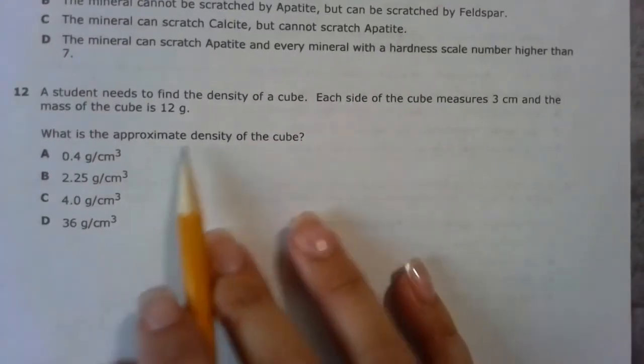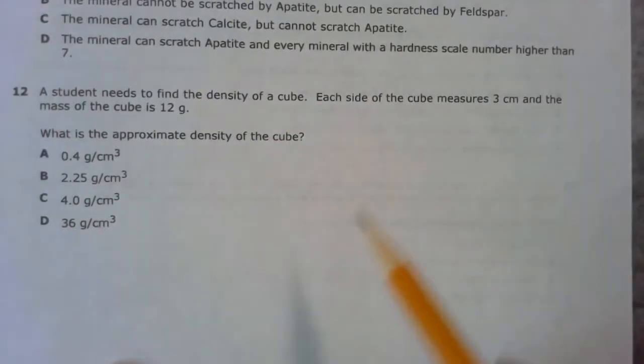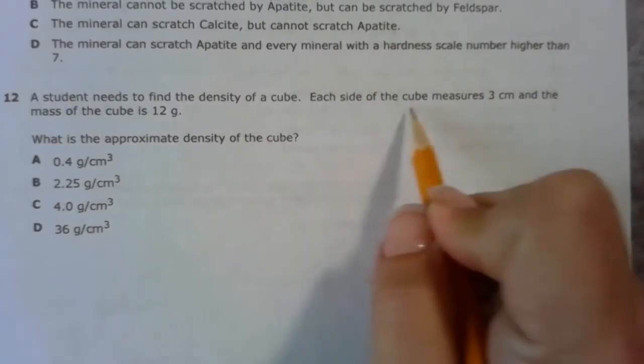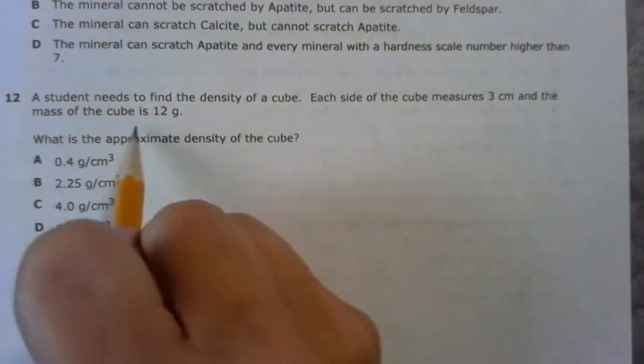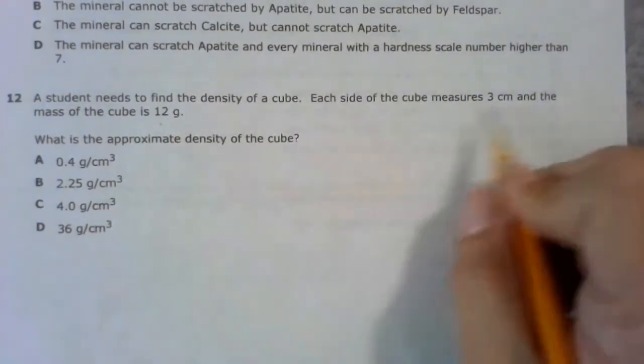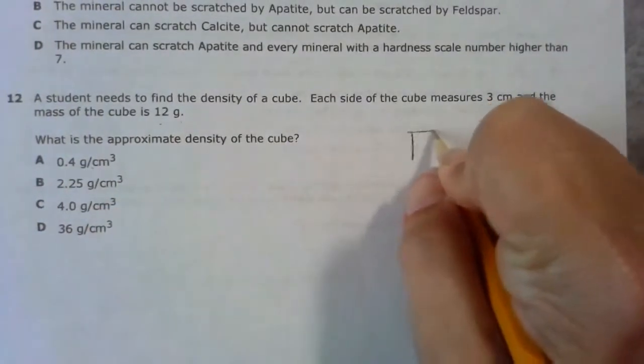Okay, number 12. A student needs to find the density of the cube. Each side of the cube measures three cubic centimeters and the mass of the cube is 12 grams, so I need to find the volume of that cube.